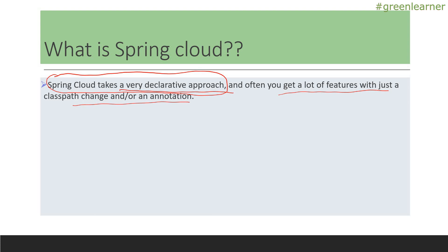In future videos we will see how we can easily integrate Spring Cloud libraries for different features. You just have to add a few dependencies and a few annotations for whatever feature you want, and all the features get added automatically by default. And obviously going further, you can customize that as well.